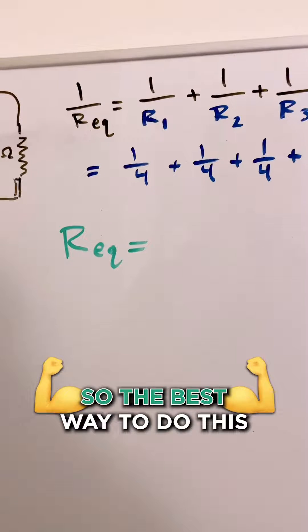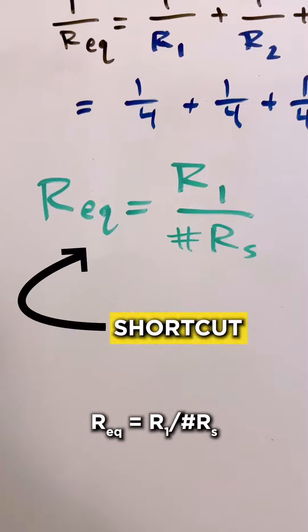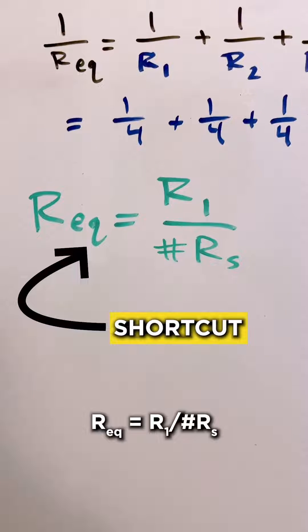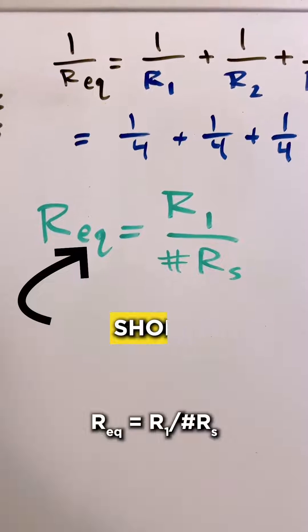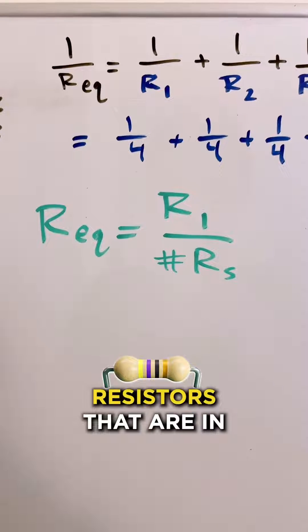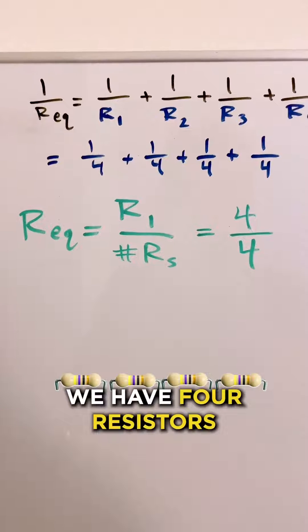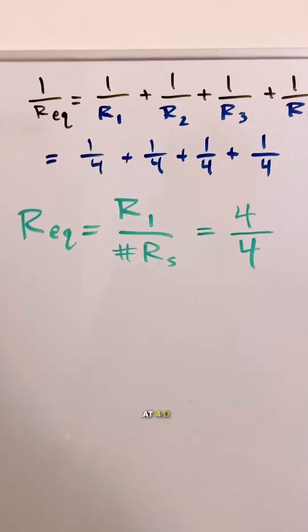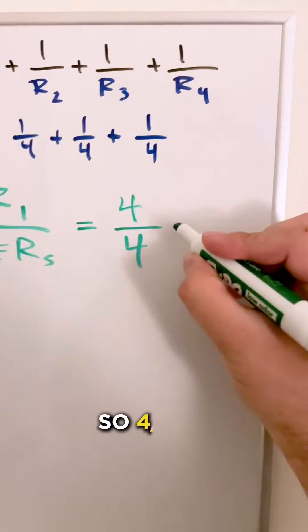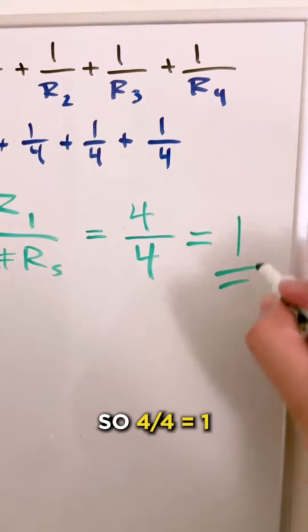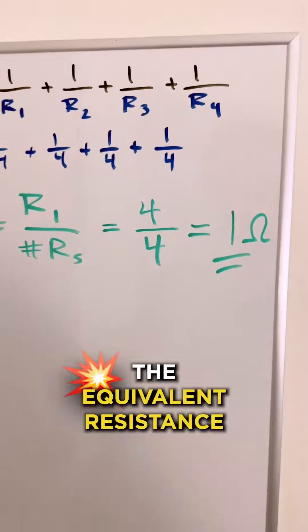So the best way to do this is to say the R equivalent equals R1 over the total number of resistors that are in the circuit. And in this case we have four resistors and each of them are valued at four ohms. So four over four equals one. So that's going to be the equivalent resistance.